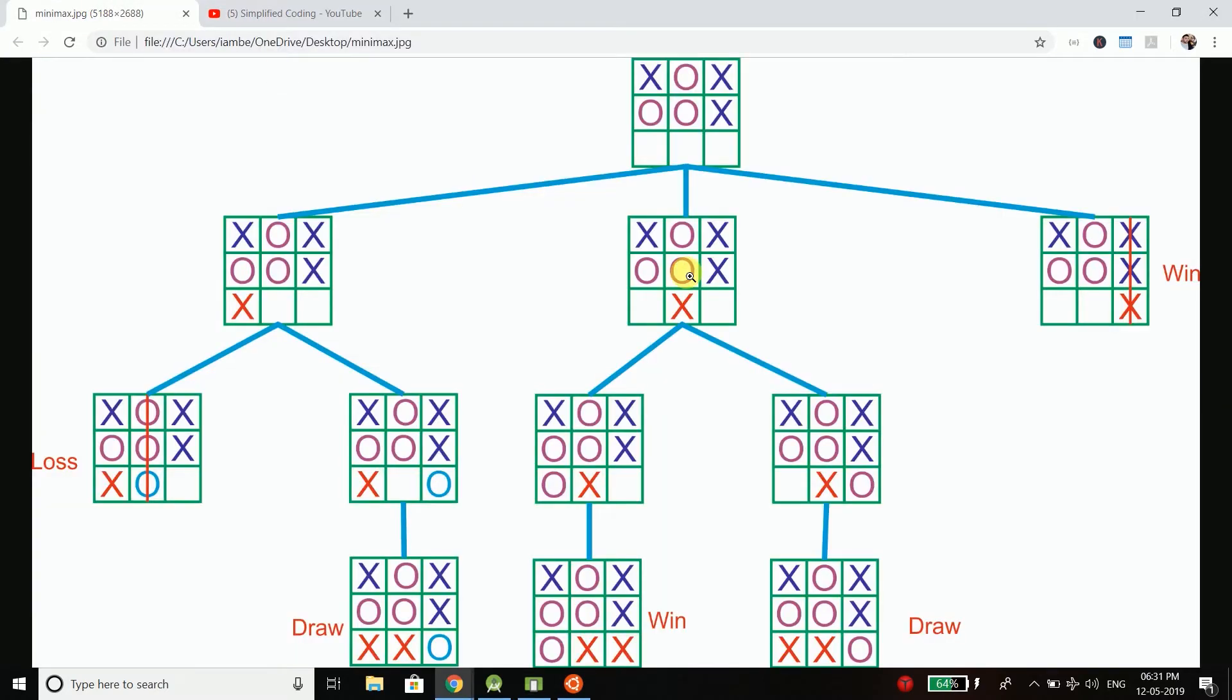And to explain this thing better, I have a sample here and this is the current state of our board, because we cannot evaluate it from the starting because we have so many possibilities. But for the computer it is very less and we can evaluate all the possibilities with the help of a program. But as a human we cannot do all the possibilities.